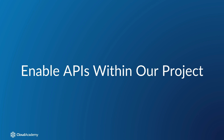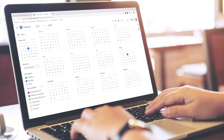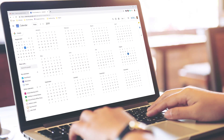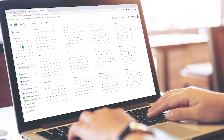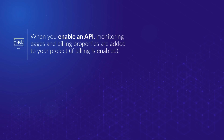Next, we will learn how to enable APIs for our project. Google Cloud Platform provides several project building blocks in the form of APIs, ranging from storage to machine learning. Many of the APIs needed for common tasks are enabled by default, such as storage. To extend the services enabled, you can enable additional APIs. For example, suppose you are writing an application that interacts with a user's Google Calendar — to add or schedule events programmatically, you would enable the Google Calendar API. You can find a complete list of GCP APIs at https://cloud.google.com/apis. When you enable an API, monitoring pages and billing properties, if billing is enabled, are added to your project.